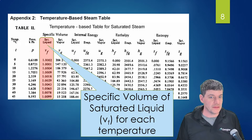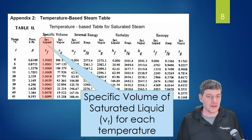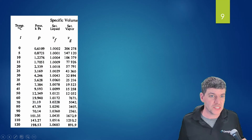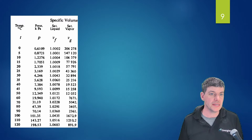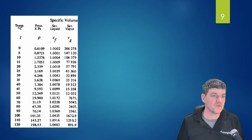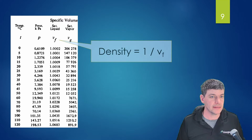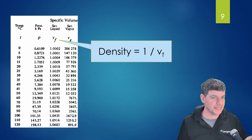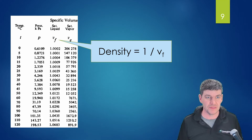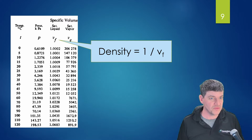What we see in that column is specific volume, not density — specific volume of the saturated liquid at each temperature. Looking at specific volume in more detail, the vf values don't match density; in fact they're the inverse. So if I want to find density, I take 1 and divide it by the vf values. We'll do that in just a second.